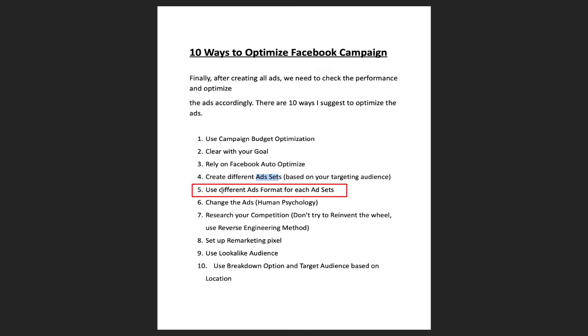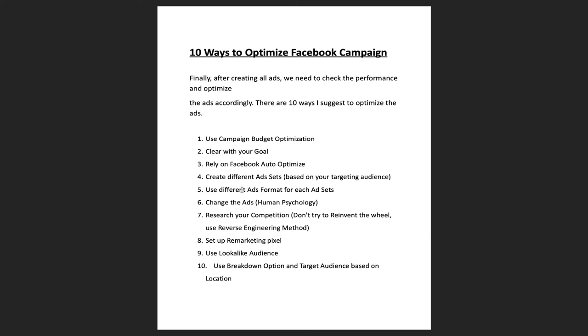The fifth tip is to use different ad formats. For every ad set within a campaign, try to use more than three to four ads. For example, if you're running one ad for one product, try using image ads, video ads, and carousel ads — as I mentioned in the ad format lesson. Use different ad formats for the same product so your target audience finds what they're looking for and clicks on it. Every ad set should have more than one ad format.